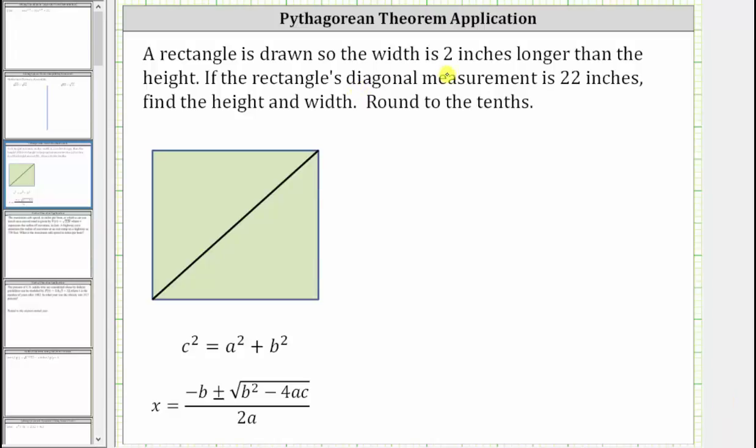A rectangle is drawn so that the width is two inches longer than the height. If the rectangle's diagonal measurement is 22 inches, find the height and width. Round to the tenths.